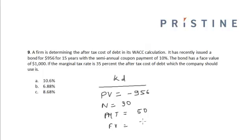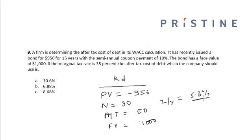Once we run these values and solve for the yield, it gives a semi-annual yield of 5.3%. The annual yield will therefore be 10.6%, which equals the cost of debt before tax.